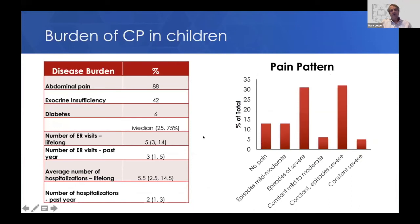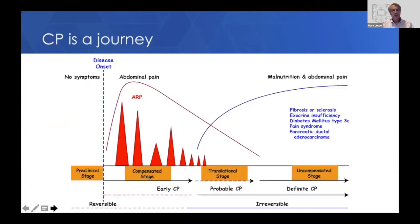Children have a lot of burden from chronic pancreatitis — pain, as seen in adults, exocrine insufficiency in about 42%, and diabetes in about 6%, though I think that number may be higher. Many children have constant episodes of severe pain — about a third have episodic severe pain and a minority have constant severe pain. The burden of chronic pancreatitis is quite high in children as it is in adults.